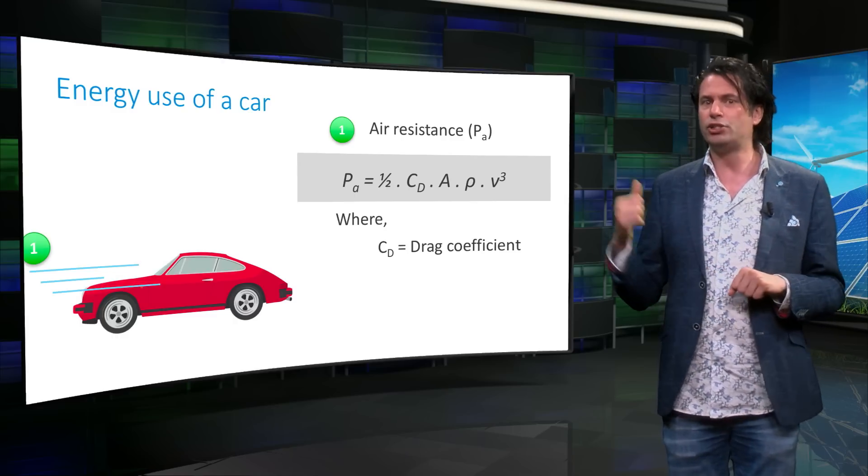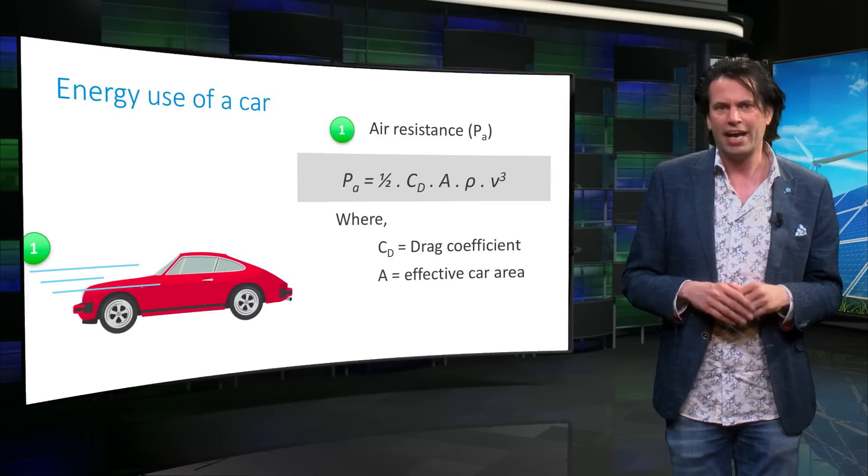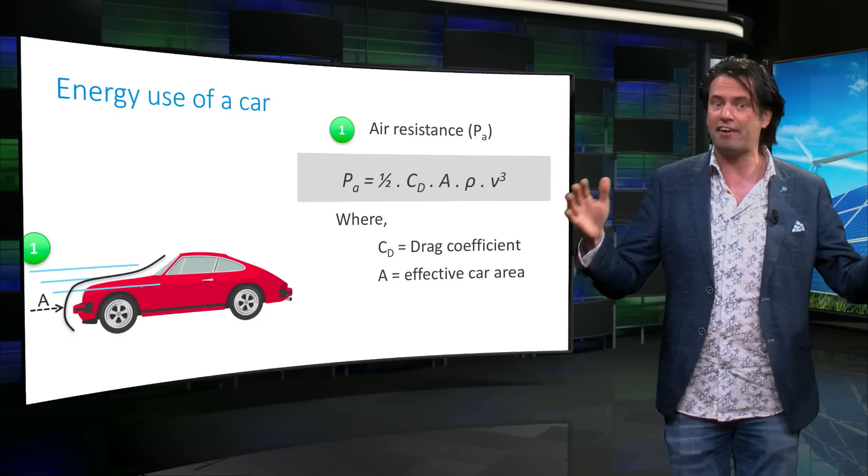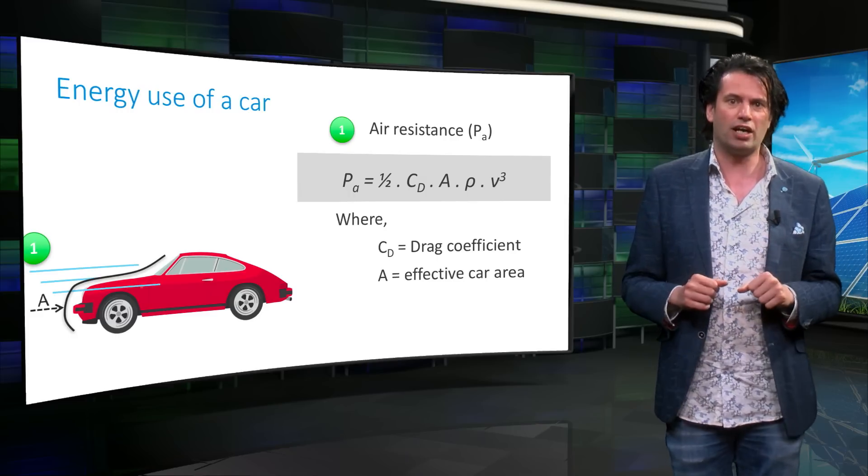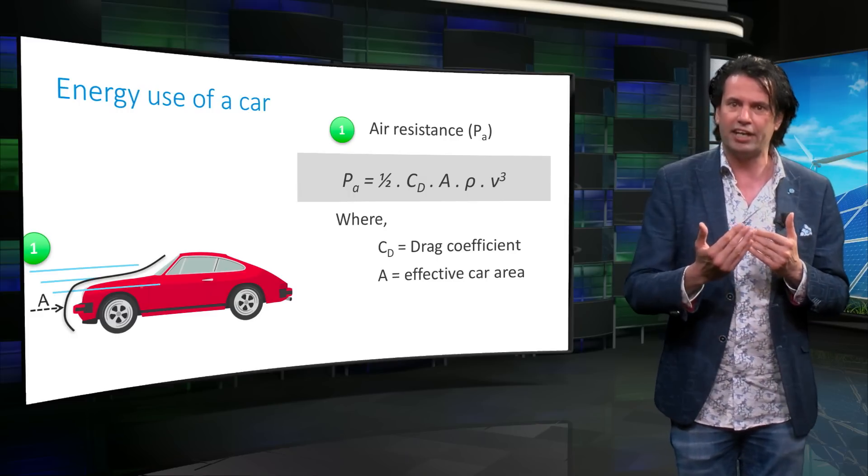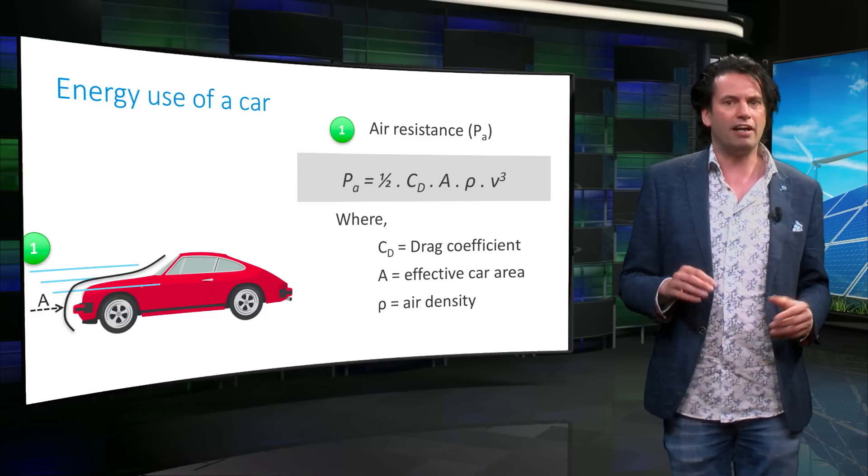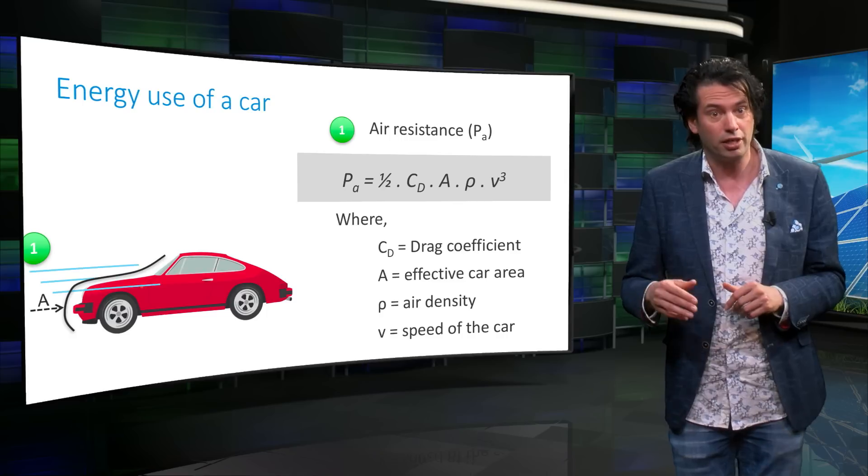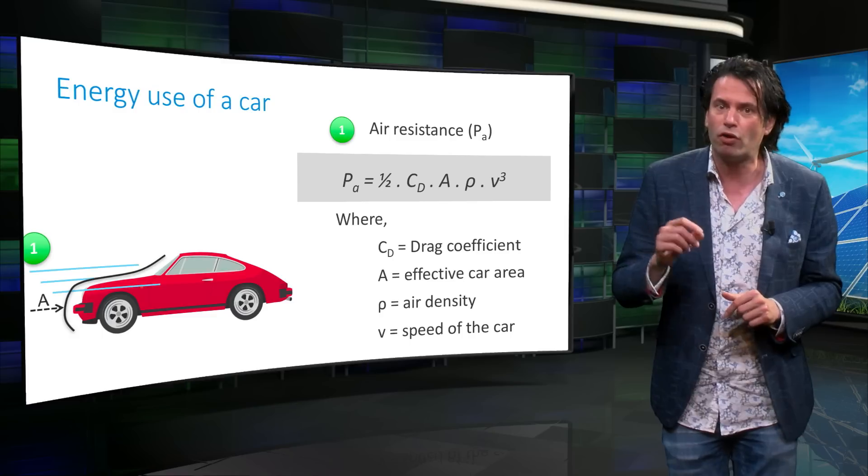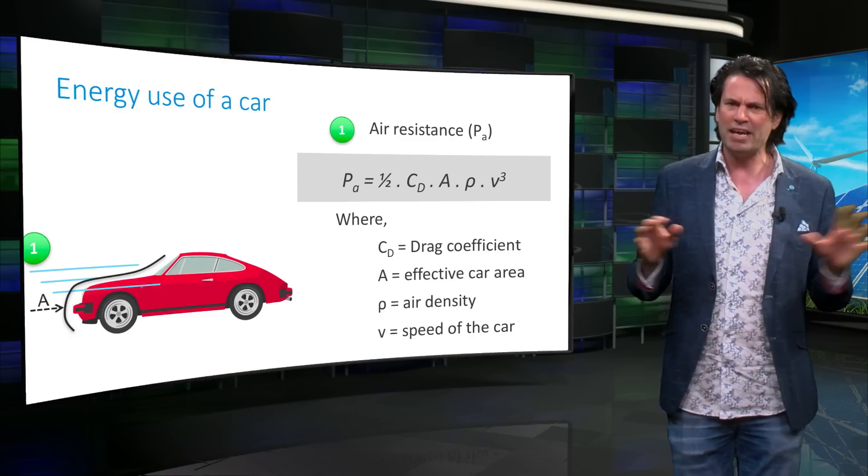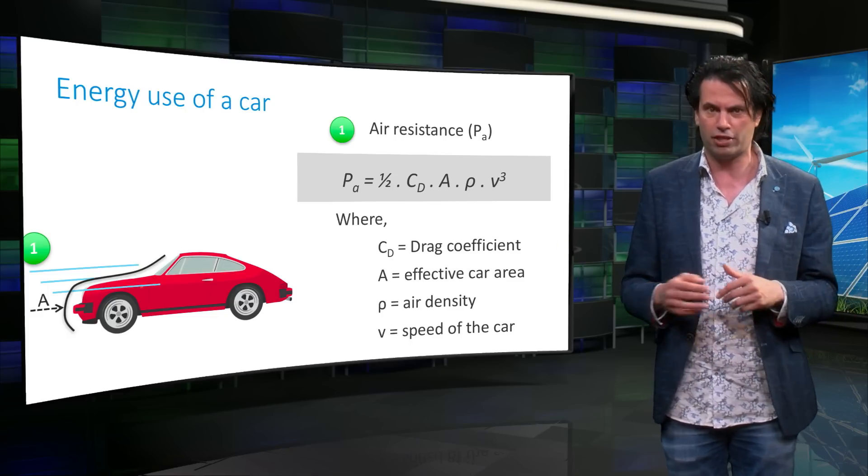Cd is known as the drag coefficient and is a dimensionless quantity. A stands for the effective area, which is the cross section area of the front of the car that faces the oncoming air during its motion. Rho pertains to the density of air and V is the speed at which the car is moving. The air resistance is proportional to the third power of the velocity V, meaning that the air resistance increases significantly if a car is traveling faster.